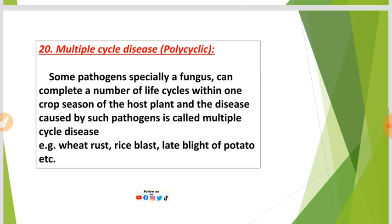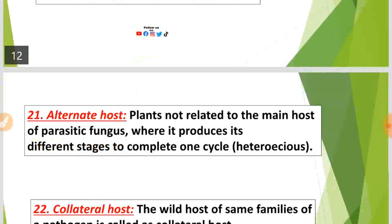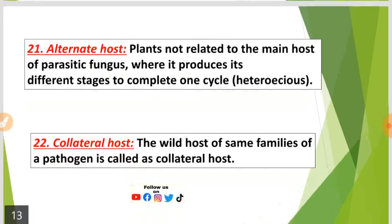Number twenty: Multiple cycle disease (polycyclic). Some pathogens, especially fungi, can complete a number of life cycles within one crop season of the host plant. Disease caused by such pathogens is called polycyclic disease. Examples include wheat rust, rice blast, and late blight of potato.